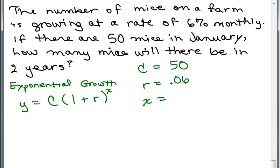And lastly, X is the number of time periods. Well, it's two years, but notice it grows at the rate of 6% monthly. So you have to think how many months are in two years and that would be 24 months.